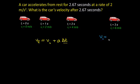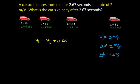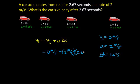Our initial velocity is 0 meters per second. The car accelerates at 2 meters per second per second. We want to know the velocity after 2.67 seconds. Plugging into the equation: final velocity equals 0 meters per second plus 2 meters per second squared multiplied by 2.67 seconds.